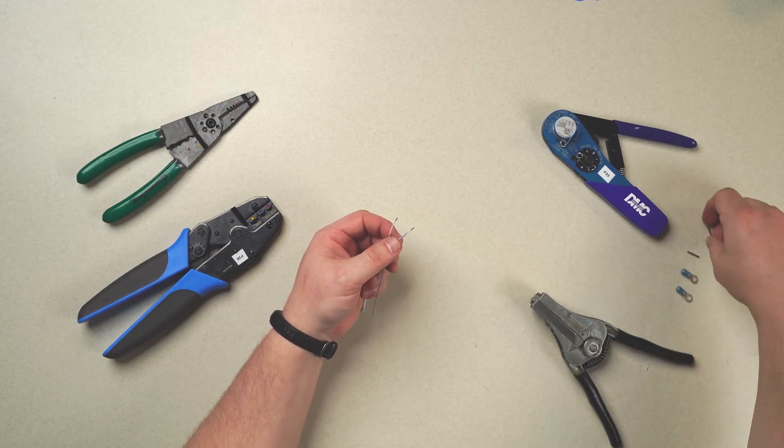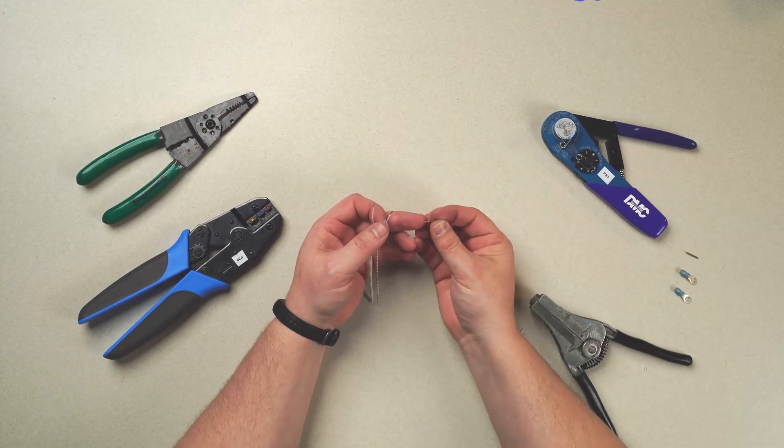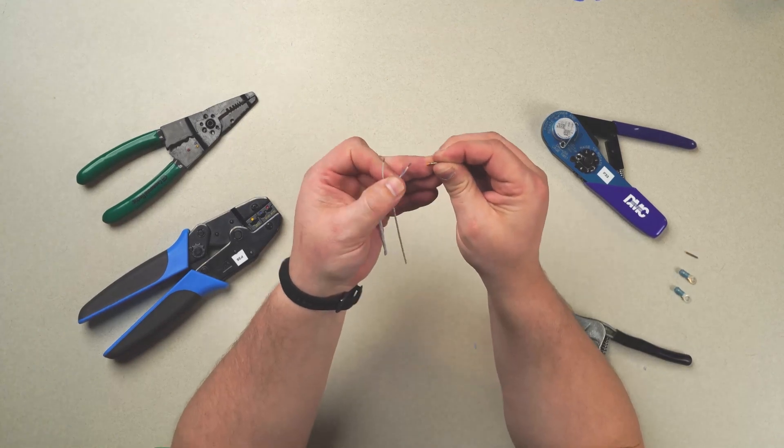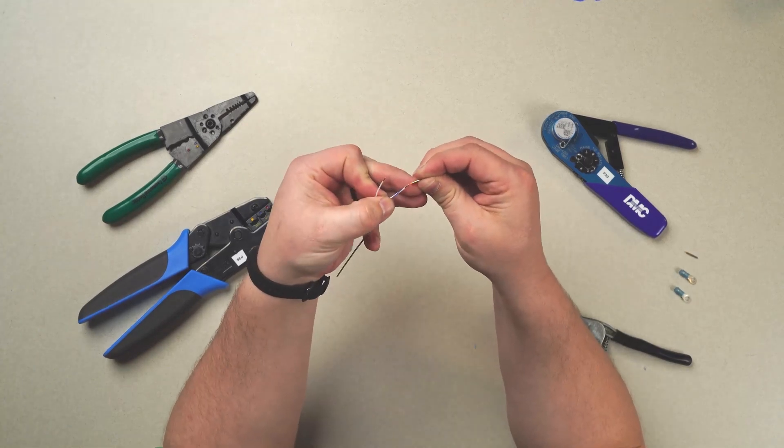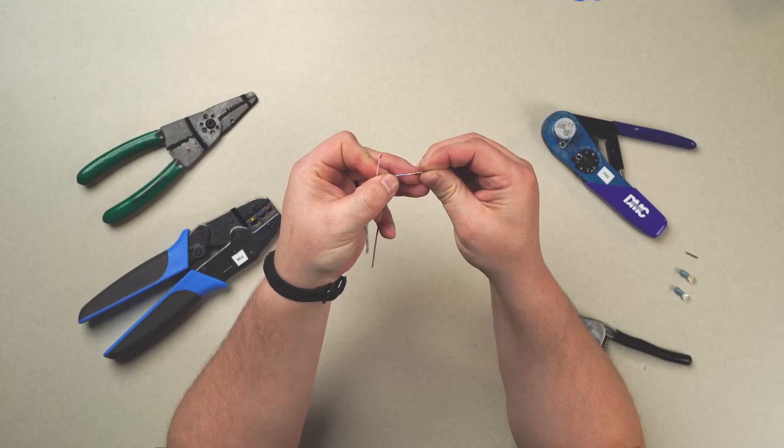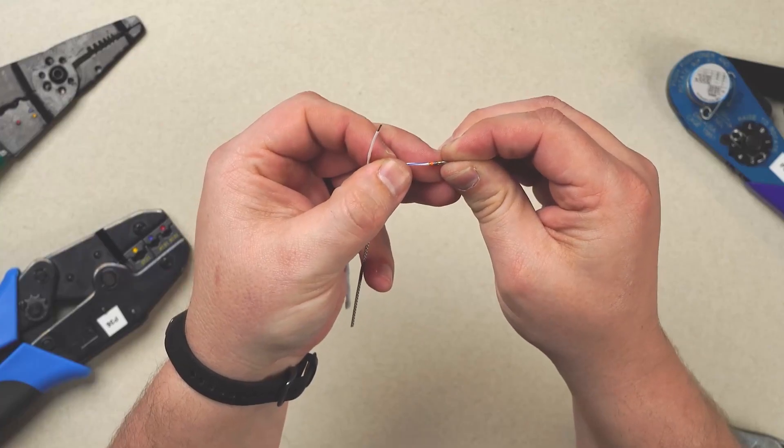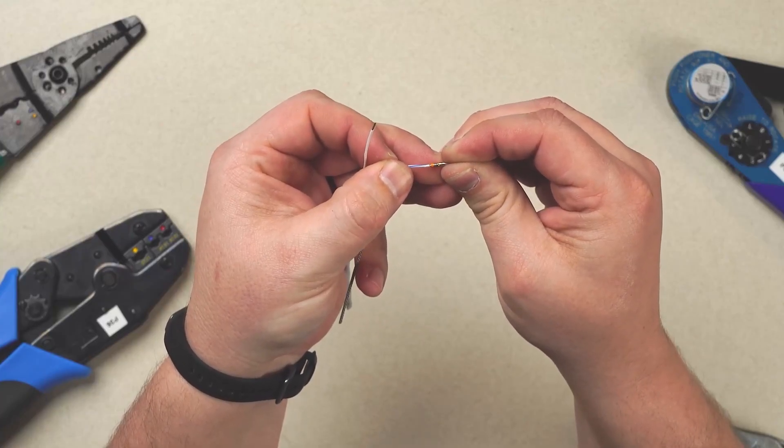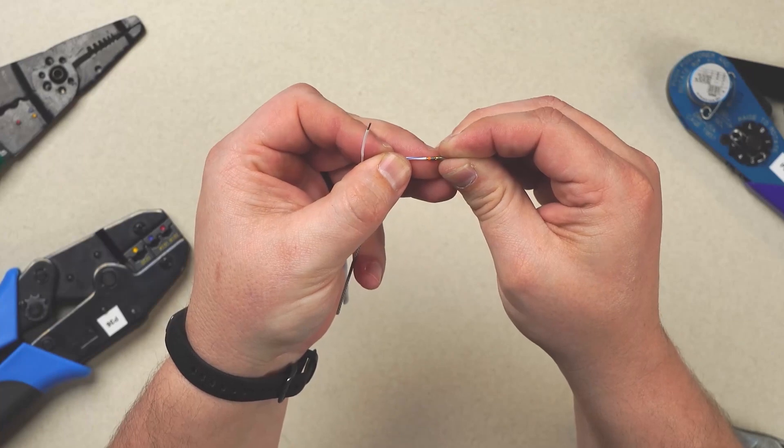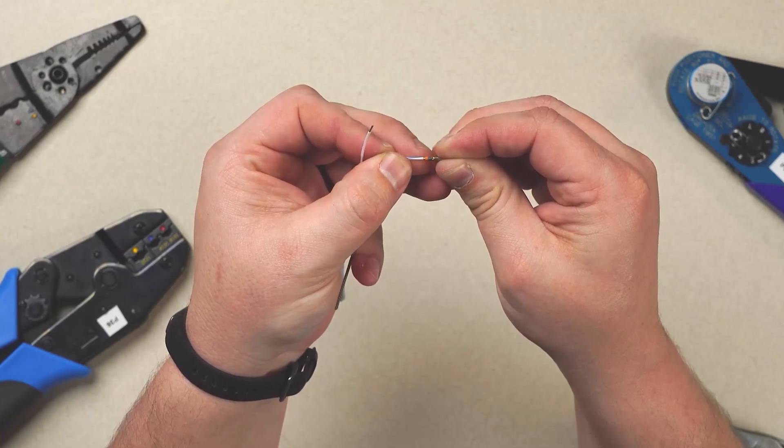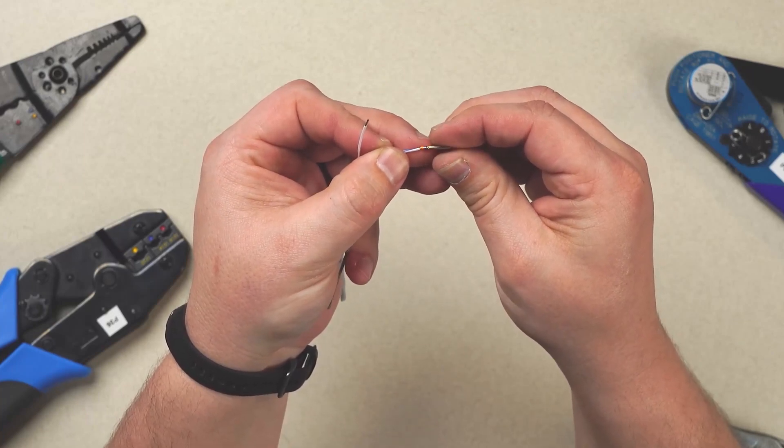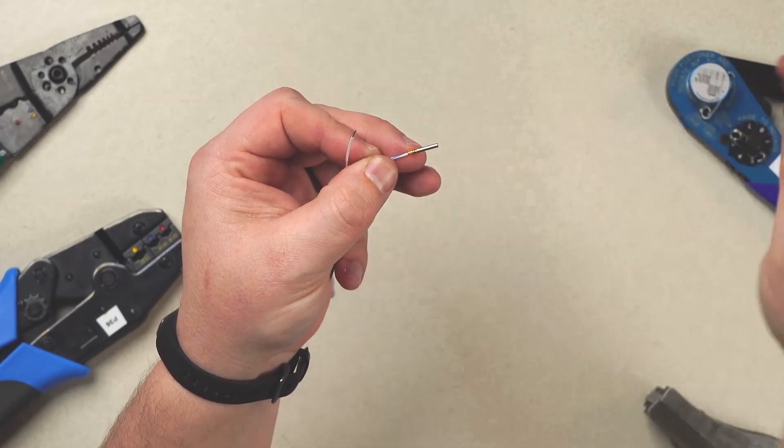Establishing the proper length of the strip, you can actually tell by utilizing the window here on your pin. And you'll see that the wire actually slides in and stops. And there's still just a squish of exposed wire before you see the insulation. So we know we're bottoming out in the pin or socket correctly.